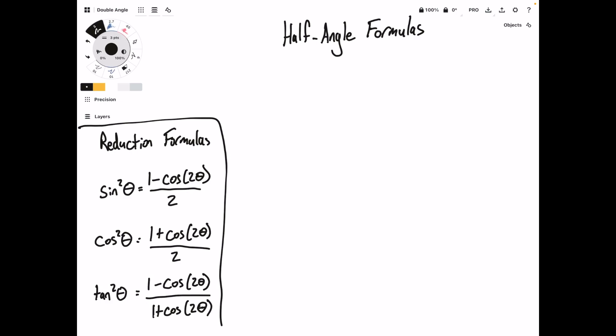In the previous video, we derived the reduction formulas, which let us turn higher powers of the trig functions into terms that only use the first power of the function. For example, here we turned sine squared into something that only uses cosine. These formulas can be used to derive the half angle formulas, so that's where we're going to start.